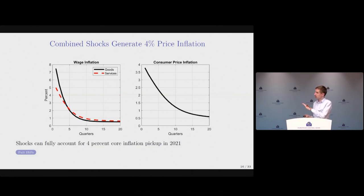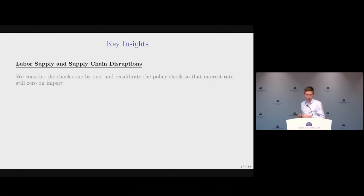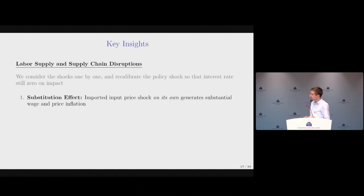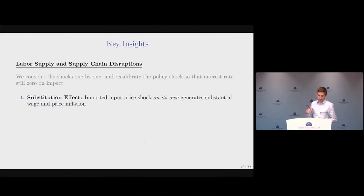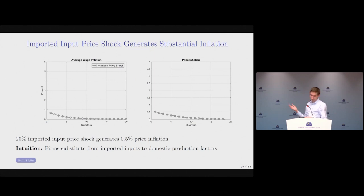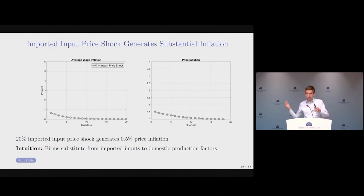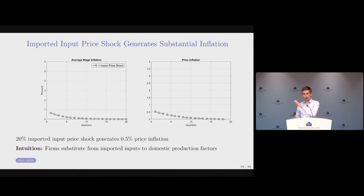Now let's look at the shocks individually. The first lesson is a substitution effect: the imported input price shock alone can generate substantial wage and price inflation. Feeding in just this shock generates about 0.5 percent price inflation. The intuition is that when supply chain bottlenecks happen and imported input prices rise, firms substitute towards domestic production, driving up demand for domestic production factors and putting pressure on wages — generating 0.5 percent price inflation without any additional shocks to the labor market.